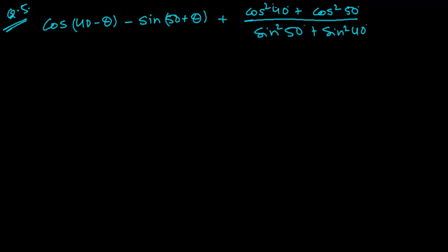In this type of problem, notice we have cos squared 50, sin squared 50, cos squared 40, and sin squared 40, and also cos(40 minus theta) and sin(50 plus theta). There are some complementary relationships here. What we have to do is convert all cos into sin, or sin into cos — that's the key. I'm going to change cos into sin.